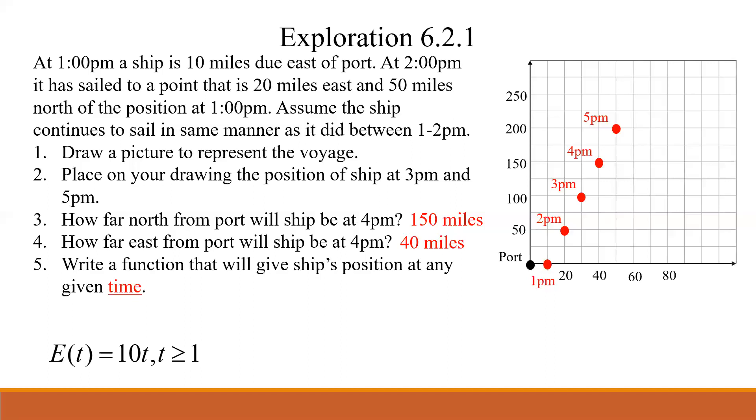So using that same kind of format, what do you think the equation for the north equation is going to be? Well again, at one o'clock it starts at zero. So we've got to make sure it starts at zero, but then every hour after that it's going to go 50 miles north. So we know our slope is going to be 50. But being starting at zero, then we have to add in that kind of negative 50. But again, restrict the domain. Notice if I plug in one for t, I get 50 minus 50, which is zero, which is right. And if I plug in two for t, I get 100 minus 50, it's 50, and so on and so forth. So that's what the equation would be for the north distance from port.